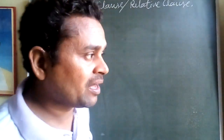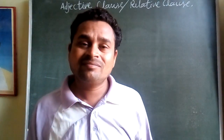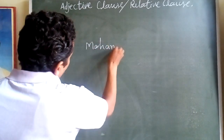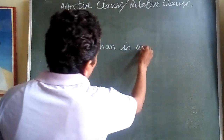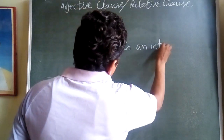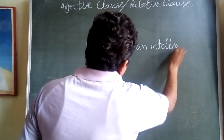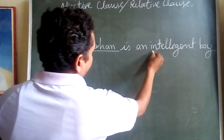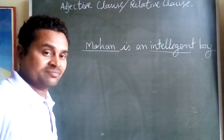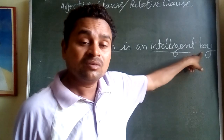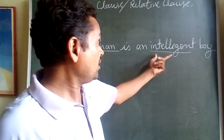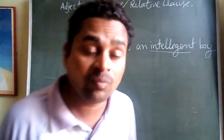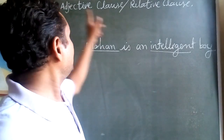For example: 'Mohan is an intelligent boy.' Here, 'intelligent' is qualifying the noun. So 'intelligent' is called an adjective, because this is a qualifying, modifying word.